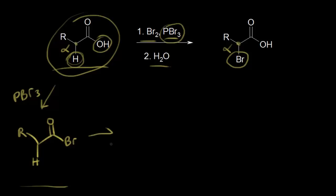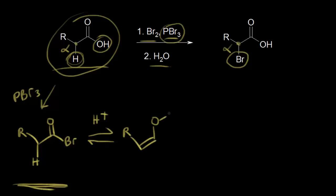Thinking about the next part of this reaction, there's acid present, so we're going to do an acid-catalyzed tautomerization. We can think about our acyl halide — this being the keto form — and draw the enol form. So we have our R group, a double bond, an oxygen bonded to a hydrogen with lone pairs of electrons, and then a bromine. This is an acyl halide enol.